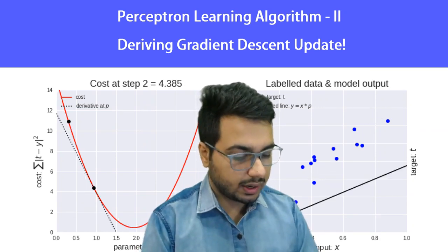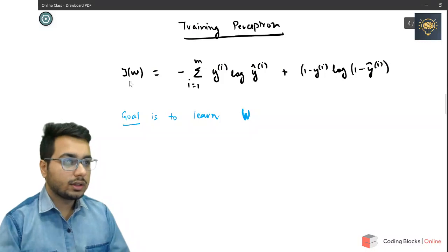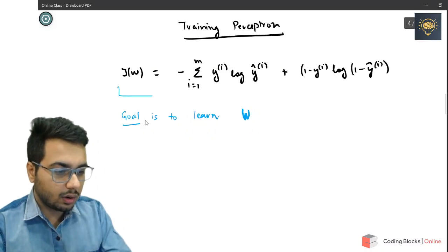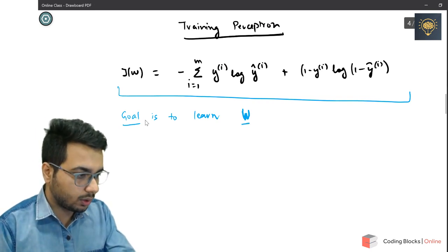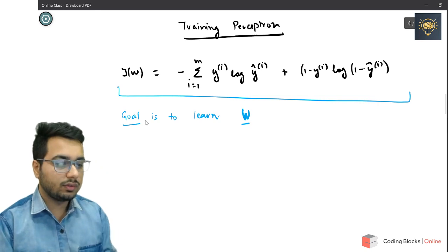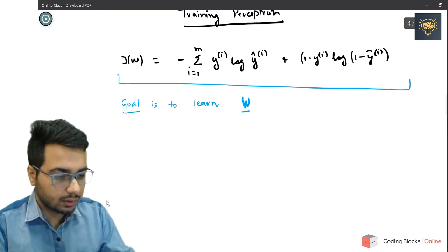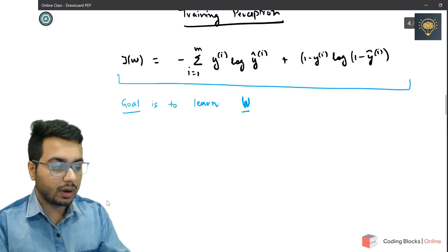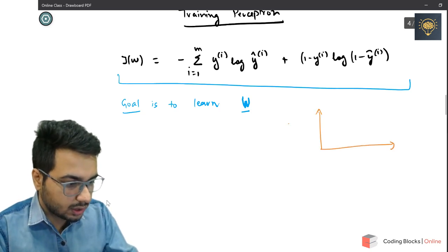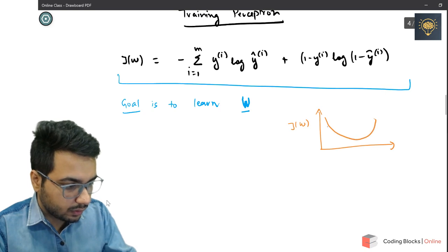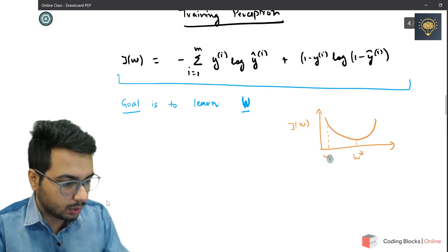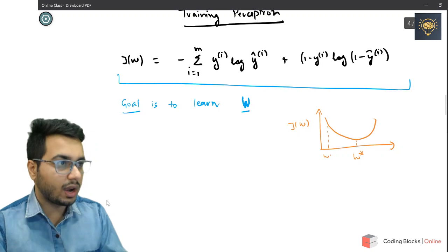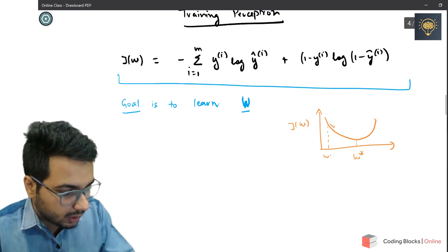So this was the loss function we talked about in the last video, and we want to learn this set of parameters w. We need to find out what w should be. We also said that this loss function J(w) is a convex function. We start from any random w and we want to end up at the optimal w, which is w*.